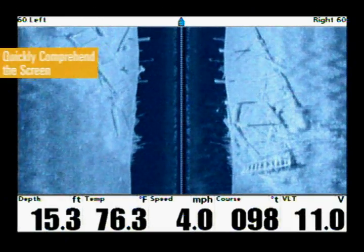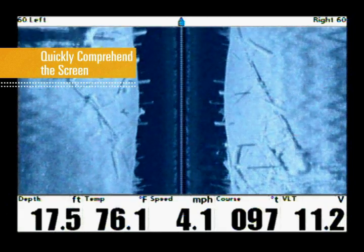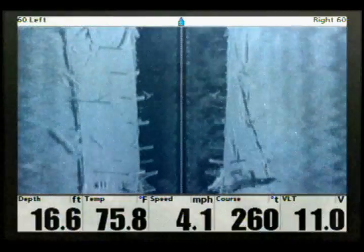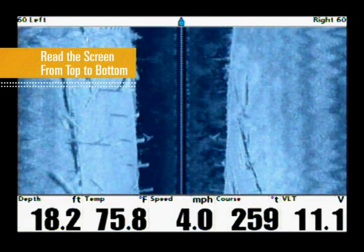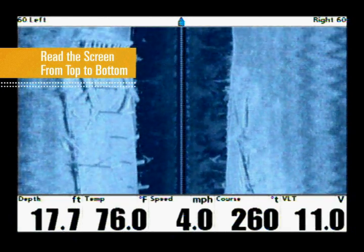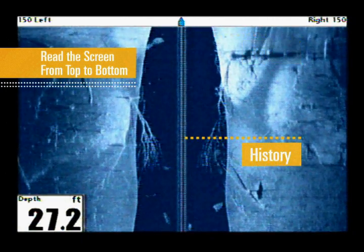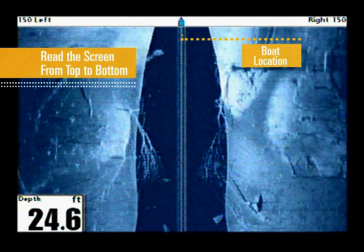The image generated by Humminbird's side imaging may look daunting at first, but by understanding a few simple principles, you'll quickly grasp everything this powerful tool is showing you. Unlike traditional sonar, side imaging moves from top to bottom instead of right to left. The most recent images will be at the top of the screen, with your history moving towards the bottom. Your boat location is top center of the image.